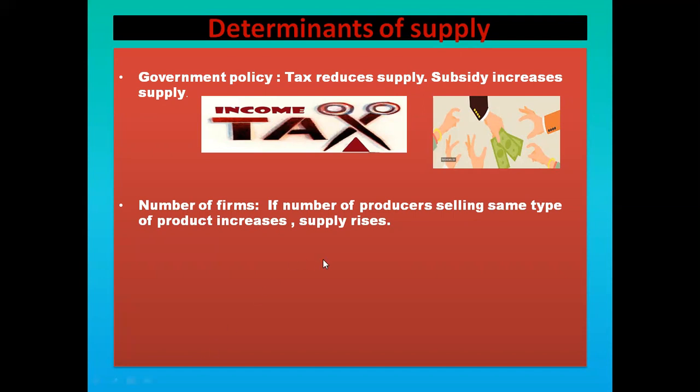Now, if the number of producers selling the same type of product increases, the supply will rise. If more and more producers come to the market producing the same type of product, the supply will rise because more producers have entered the market.